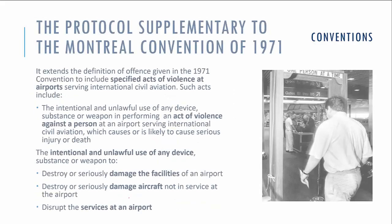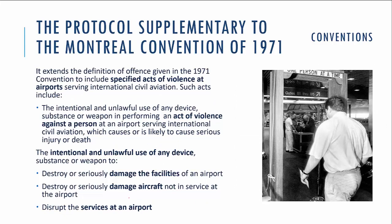The next convention was actually a supplementary protocol to the Montreal Convention of 1971. It extended the definition of offenses to include acts of violence at airports, such as acts of violence against persons at an airport, unlawful use of any device intended to destroy or seriously damage airport facilities or aircraft not in service, and disrupting the normal workflow or services at an airport.